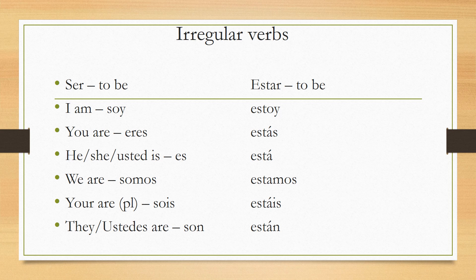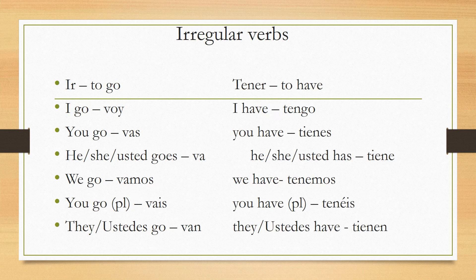For 'ir' (to go): 'I go' is 'voy'; 'you go' is 'vas'; 'he/she goes' is 'va'; 'we go' is 'vamos'; 'you go' plural is 'vais'; and 'they go' is 'van.' For 'tener' (to have): 'I have' is 'tengo'; 'you have' is 'tienes'; 'he/she has' is 'tiene'; 'we have' is 'tenemos'; 'you have' plural is 'tenéis'; and 'they have' is 'tienen.'